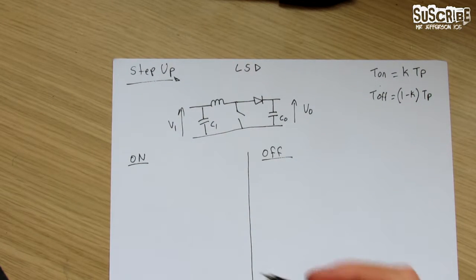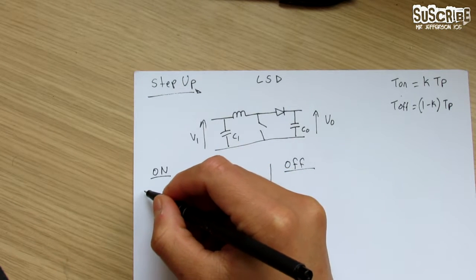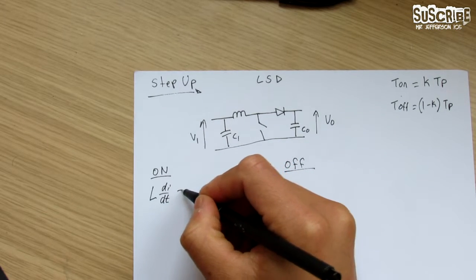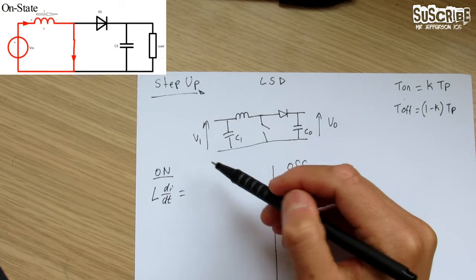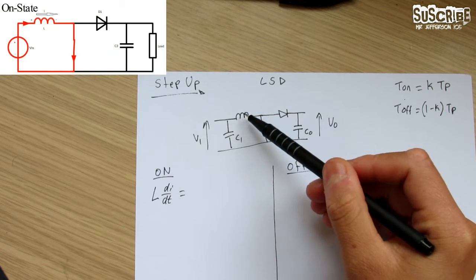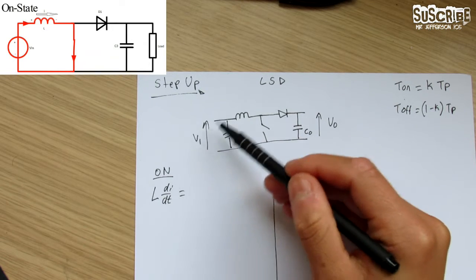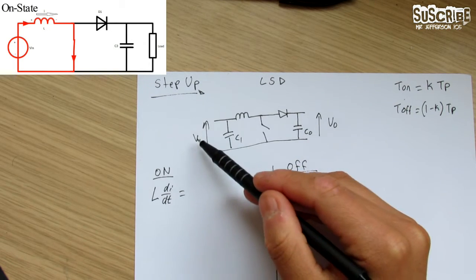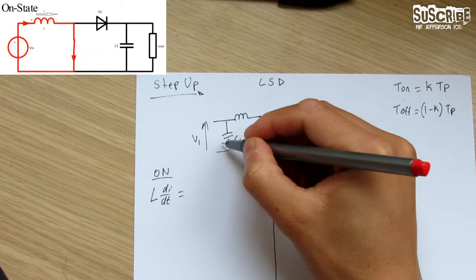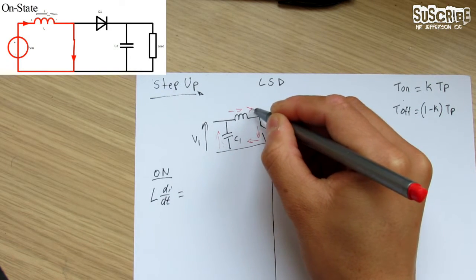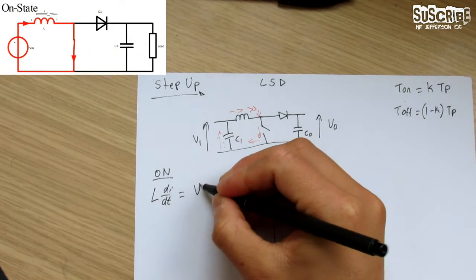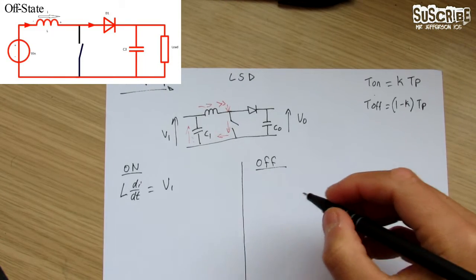The first thing we need to derive is the on time. The inductor voltage V_L = L·di/dt. During on time, the circuit is closed so only V_i goes through — the voltage travels through the inductor while the switch is closed. So the inductor voltage for the on time is simply V_i.